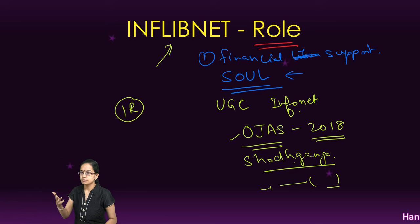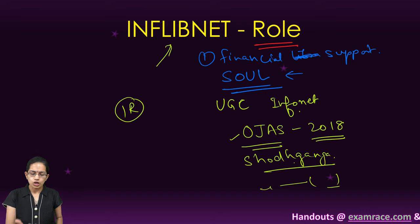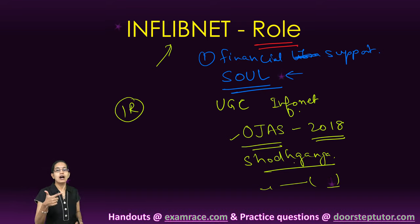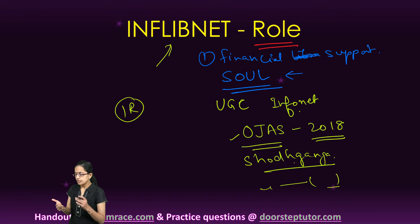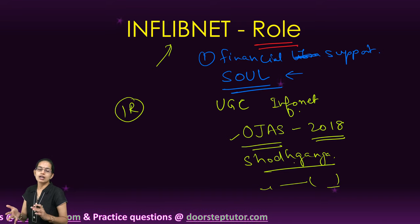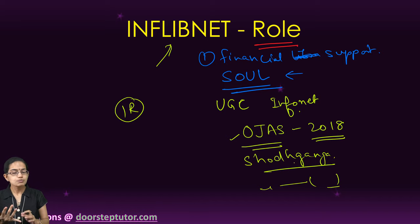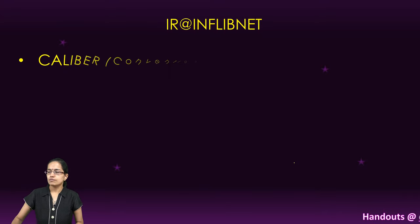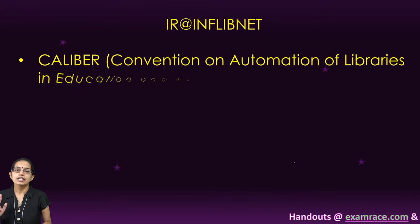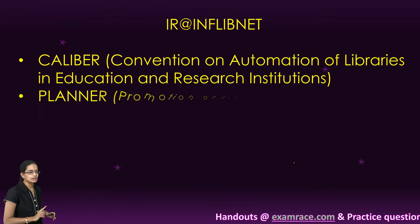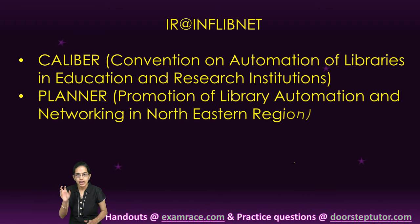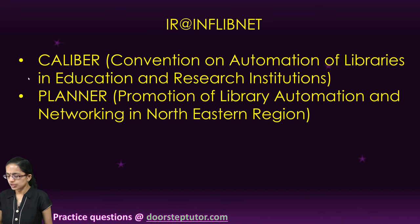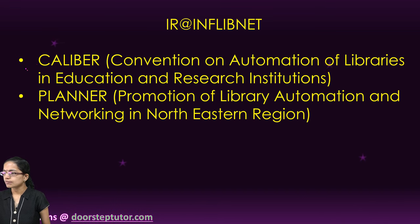Other major roles of INFLIBNET include maintaining a database of scientists, experts, researchers, and faculty from leading academic institutions, with detailed profiles and scientific bibliographies. It also maintains e-Pathshala and works through various government portals. The Institutional Repository (IR) at INFLIBNET is very important — it is where articles published through convention proceedings, particularly CALIBER and PLANNER, can be found.